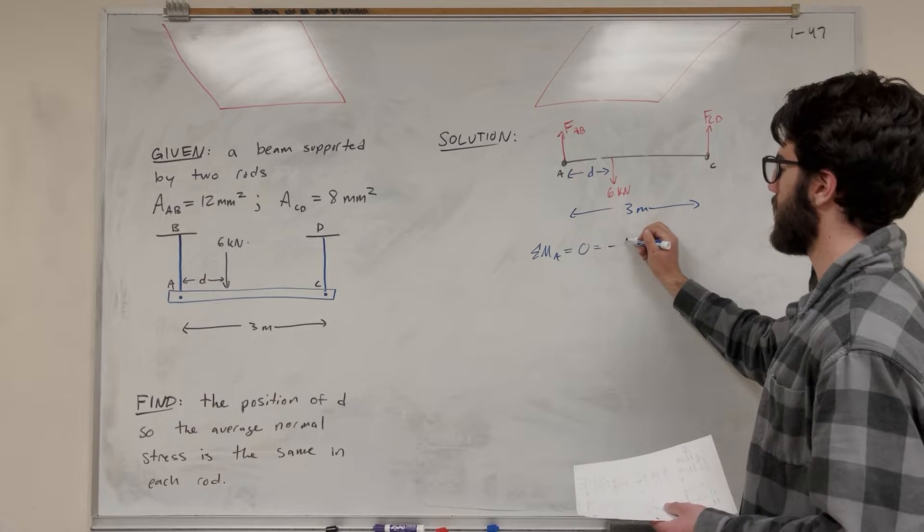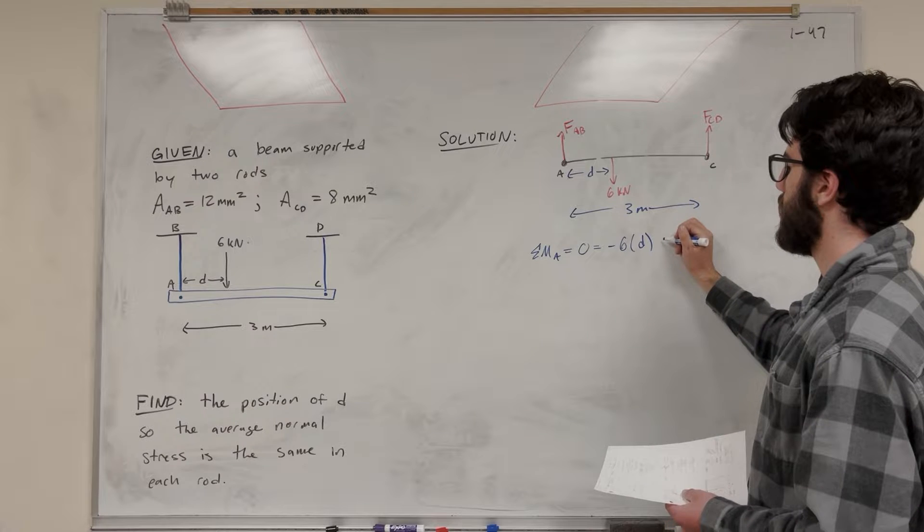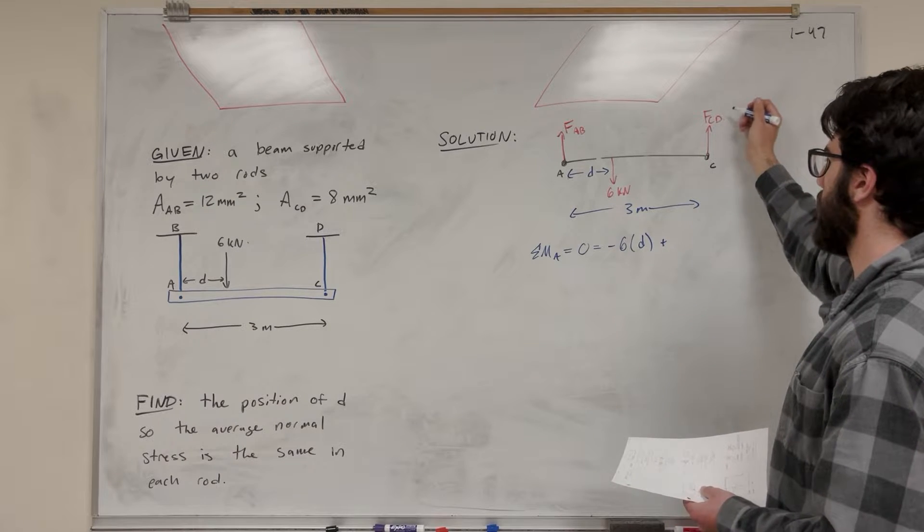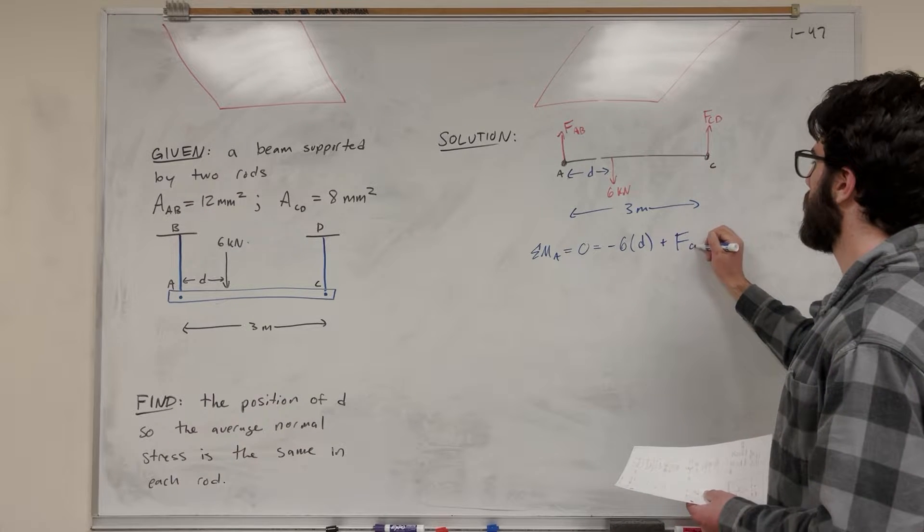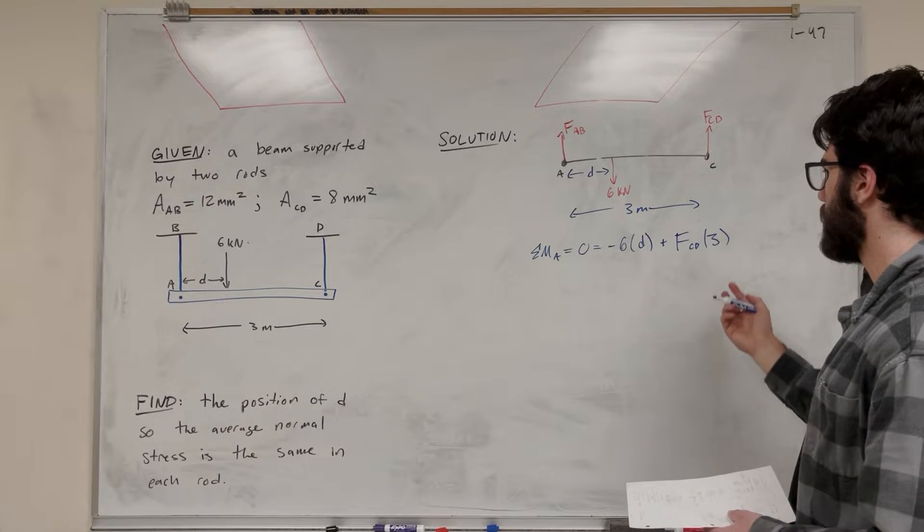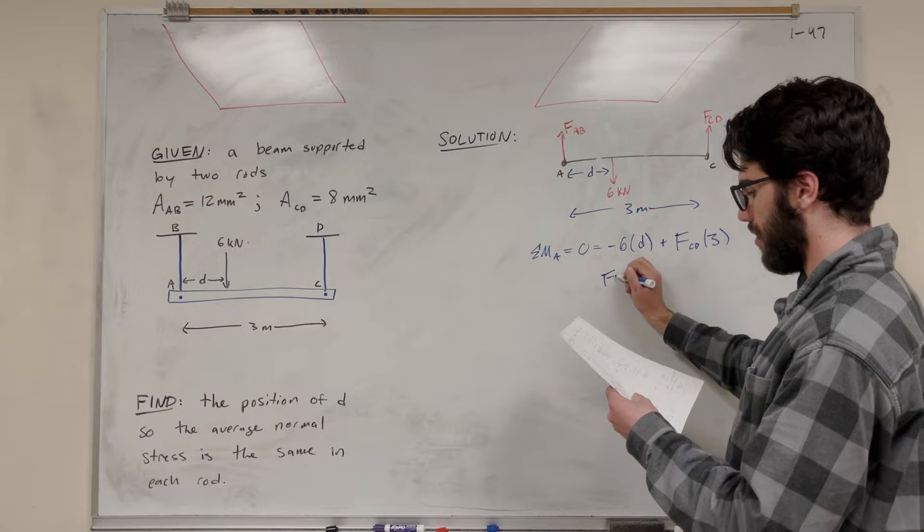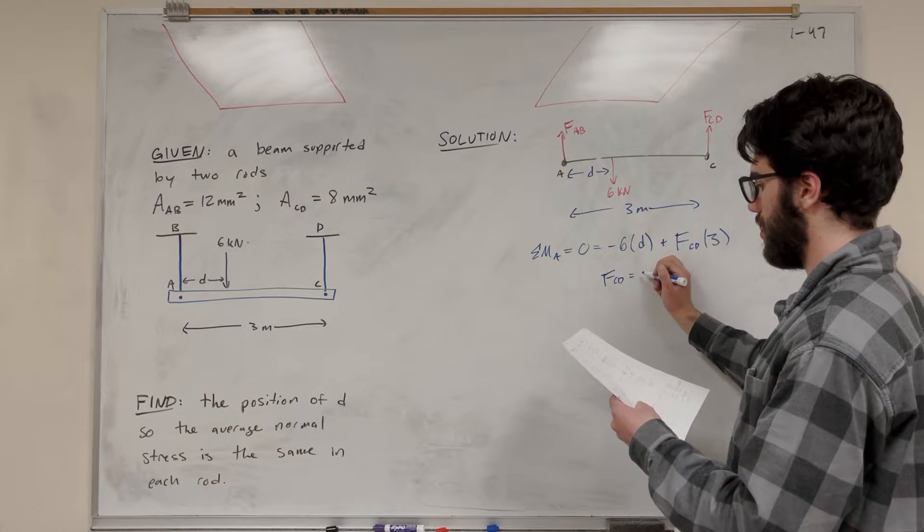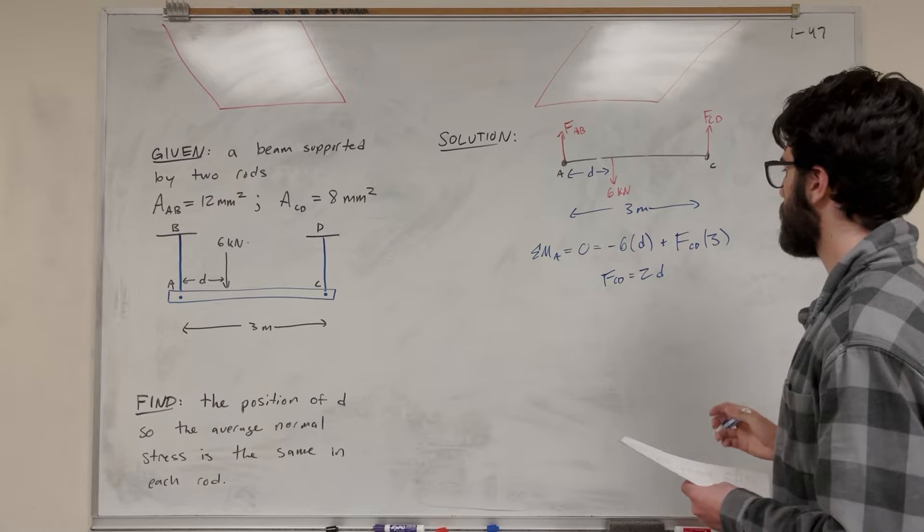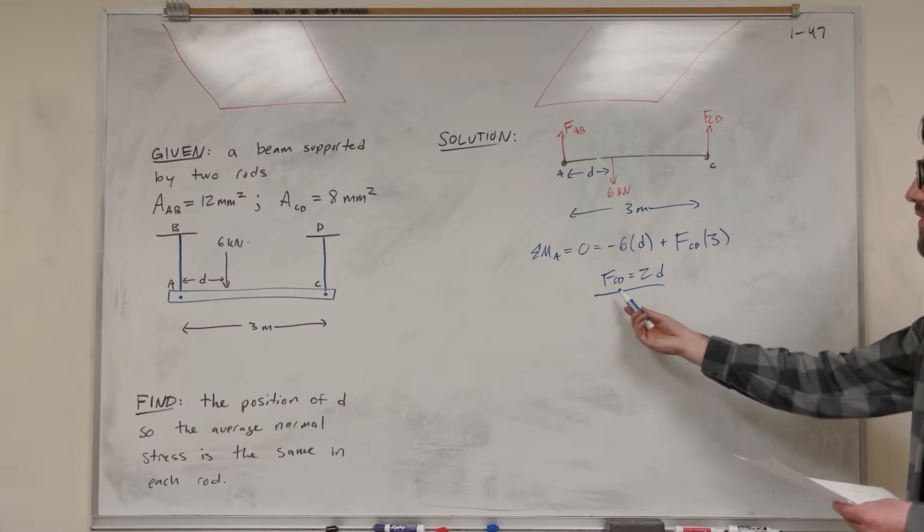it's going to be that negative six kilonewton load pushing downward. And that distance is D away. And then we have this force CD, which is pushing up that tension. And its distance is that whole three meters away. So we're going to move one of these over, and you're going to get that force CD is equal to 2D. So that's one equation we know to relate force to distance.